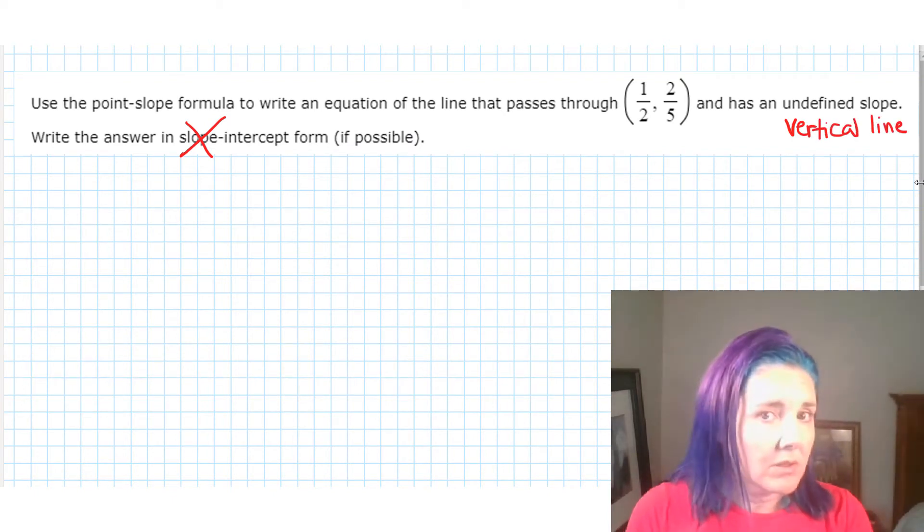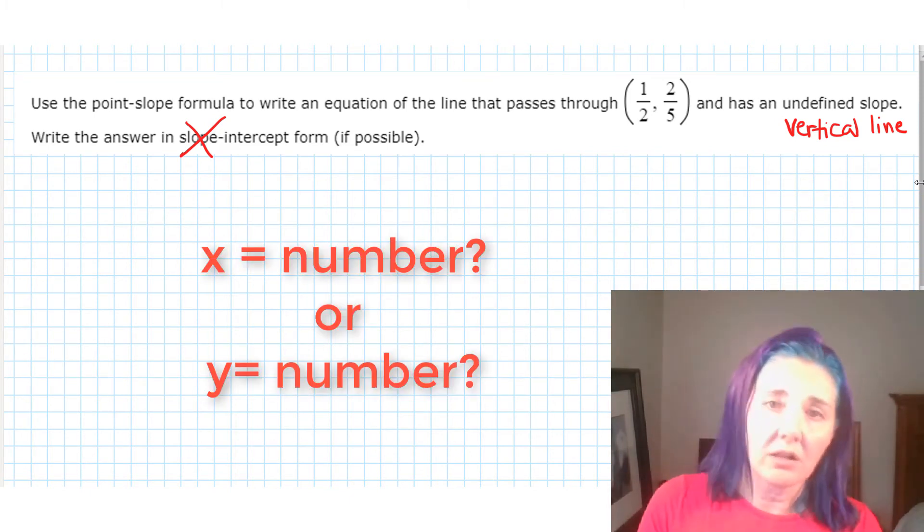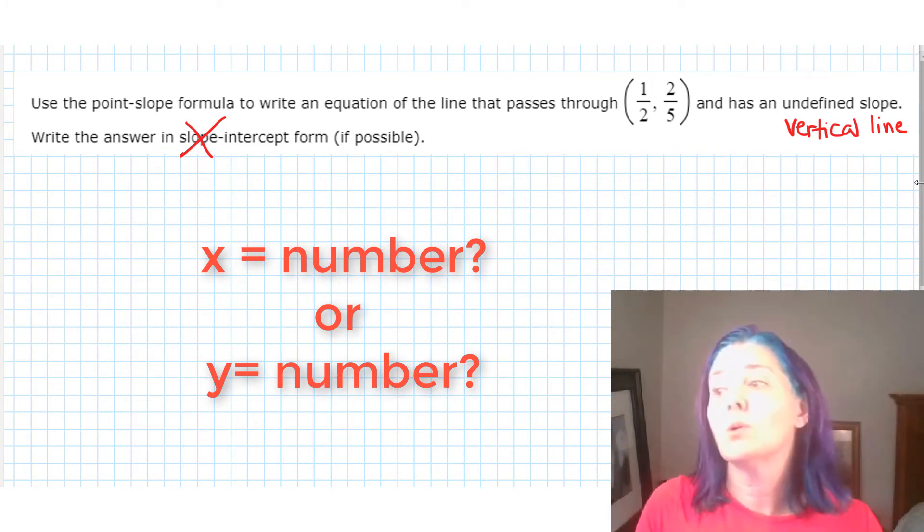Now, if you're like my students, the most confusing part about that is we know that horizontal and vertical lines are all of the form x equals a number or y equals a number, but which one is which.